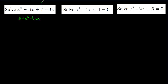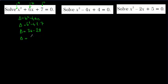For the first equation, we identify the c value, the b value, and the a value. We know that if there is no coefficient written, it is equal to 1. So delta equals b squared minus 4ac: b is 6, so 6 squared minus 4 times 1 times 7 gives us 36 minus 28, which equals 8.